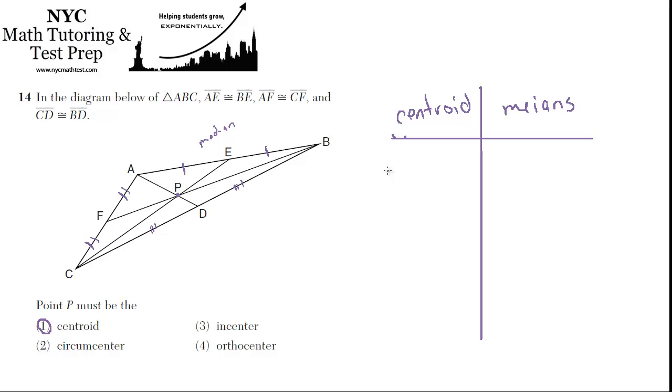We find the circumcenter when we're finding the intersection point of three perpendicular bisectors. Okay, so that's the second one.